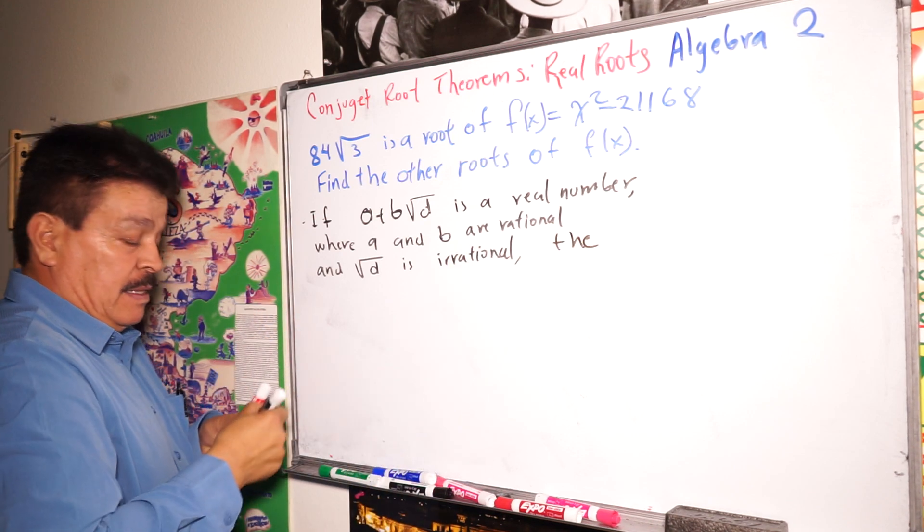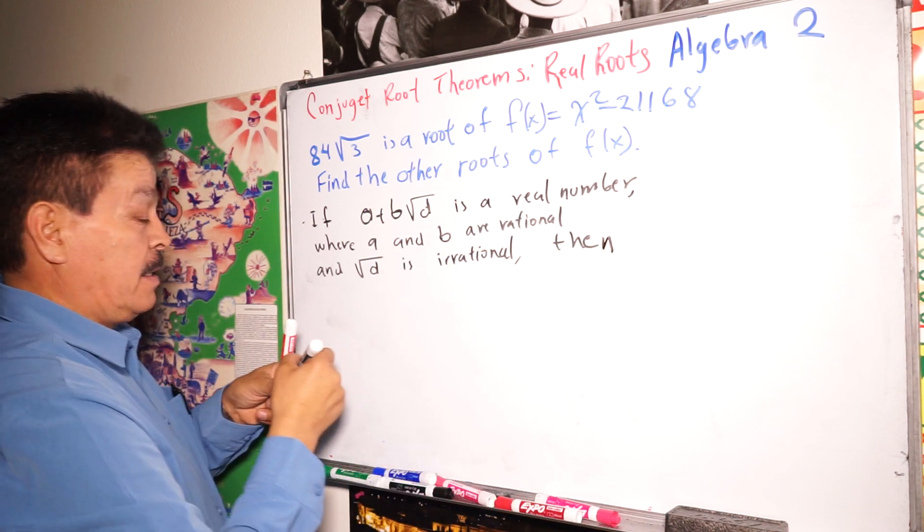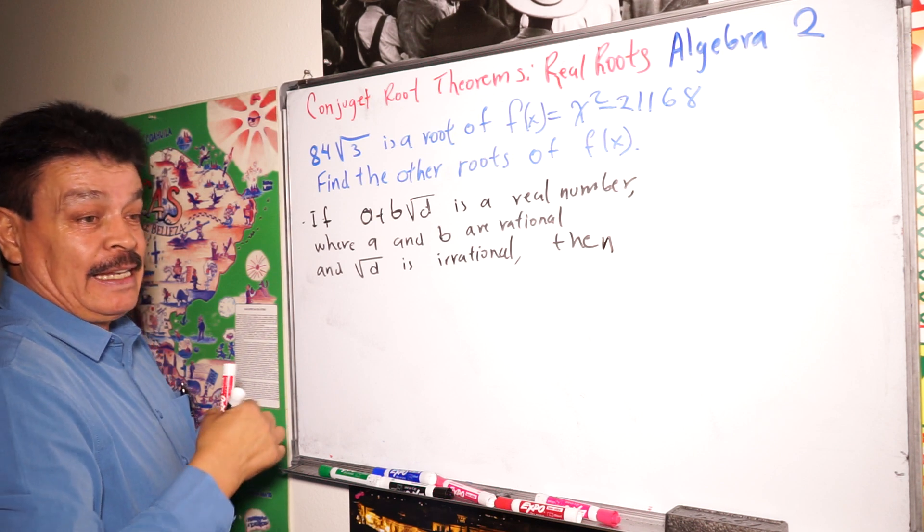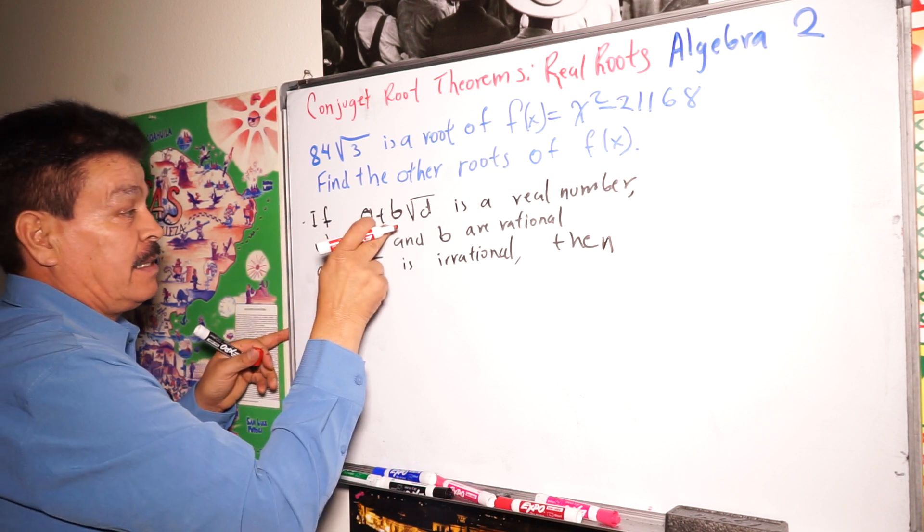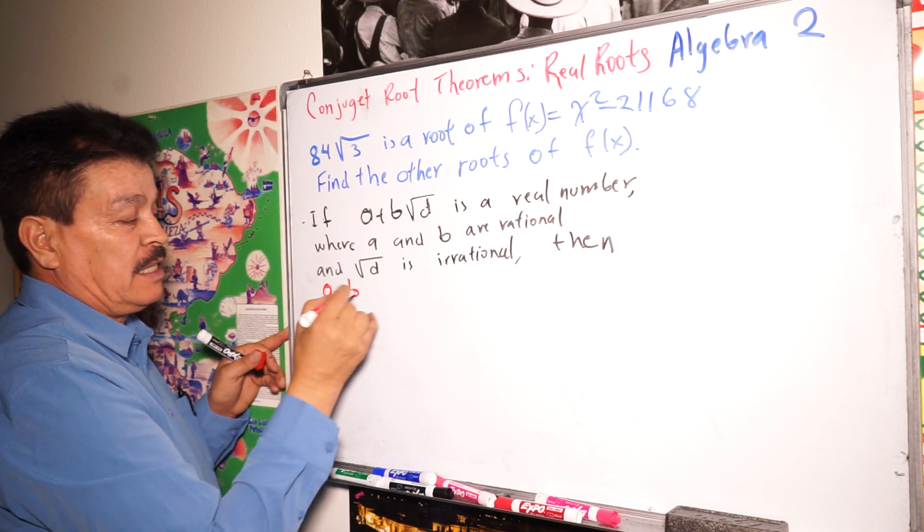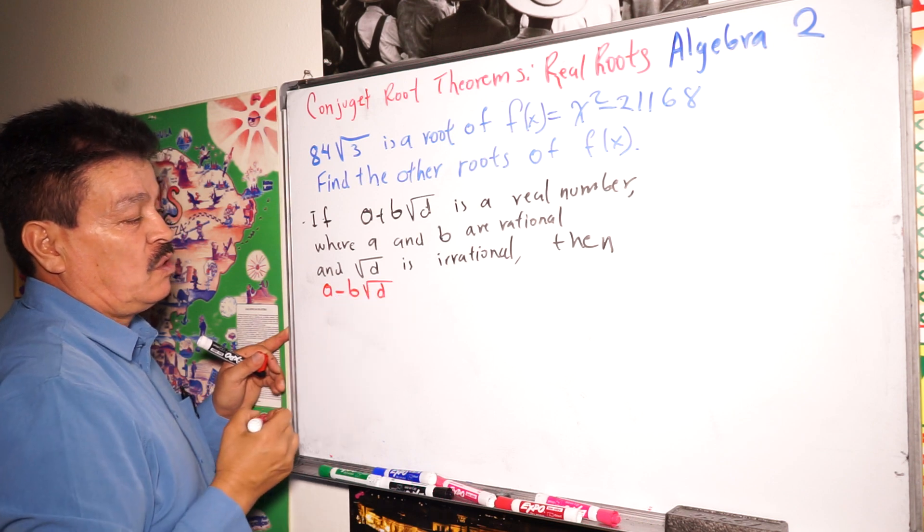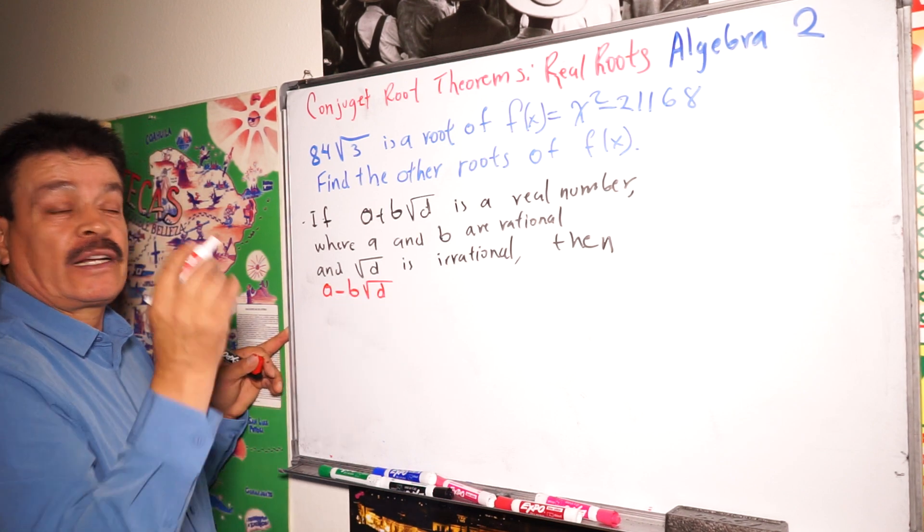So then, now, look at this. Then, a minus b times square root of d. It's a conjugate.